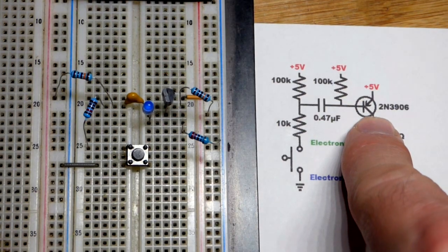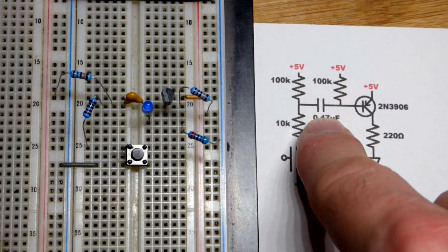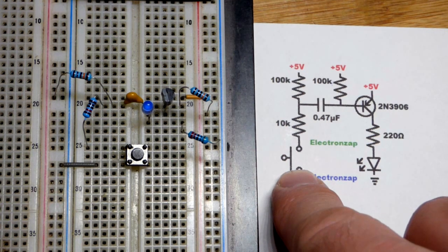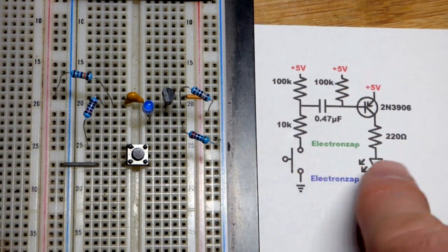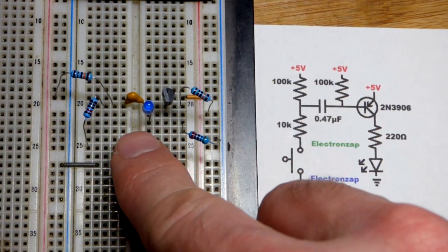In this video we're going to take a PNP bipolar junction transistor and a capacitor. We got a push button switch here and the way we have those wired up to light an LED.